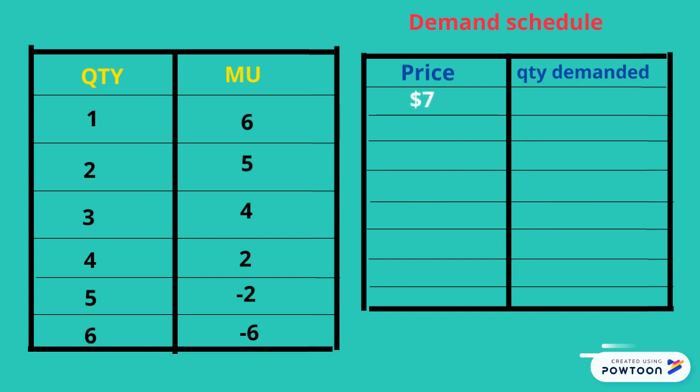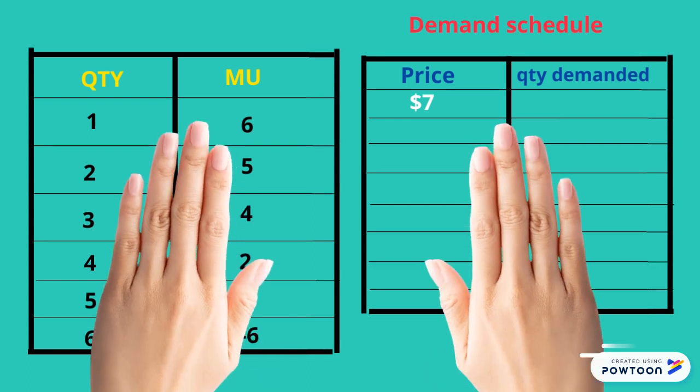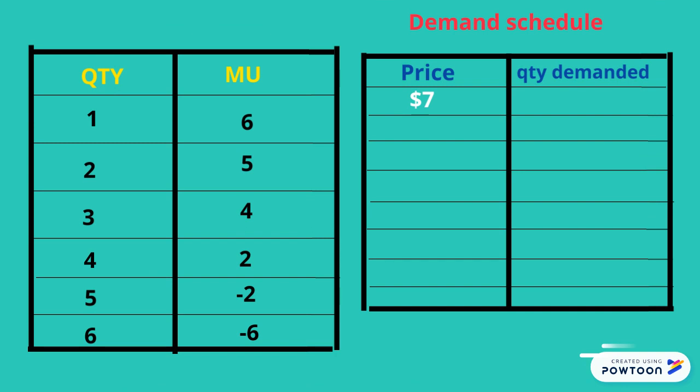When the price is $7, there is no unit that is giving you 7 units of satisfaction. Therefore, at $7, the quantity demanded will be 0.